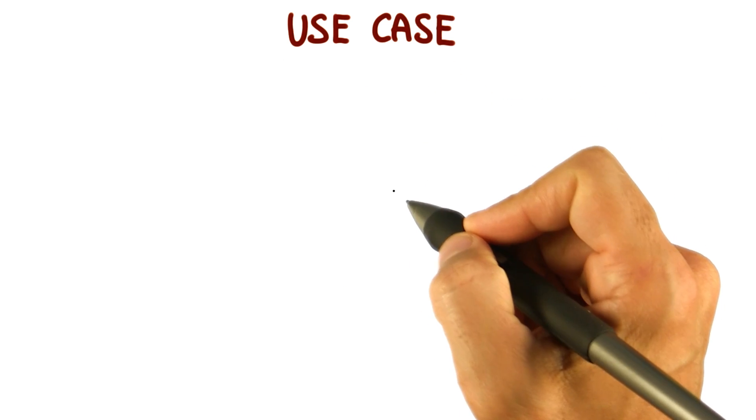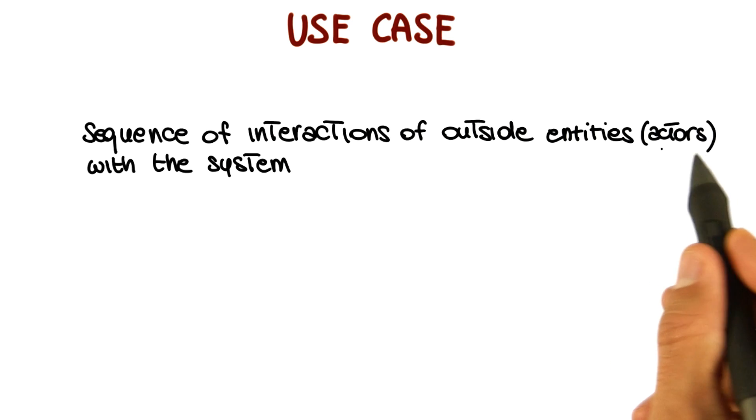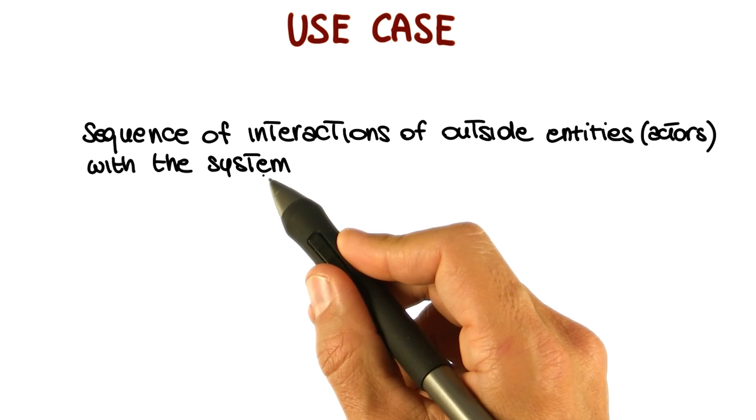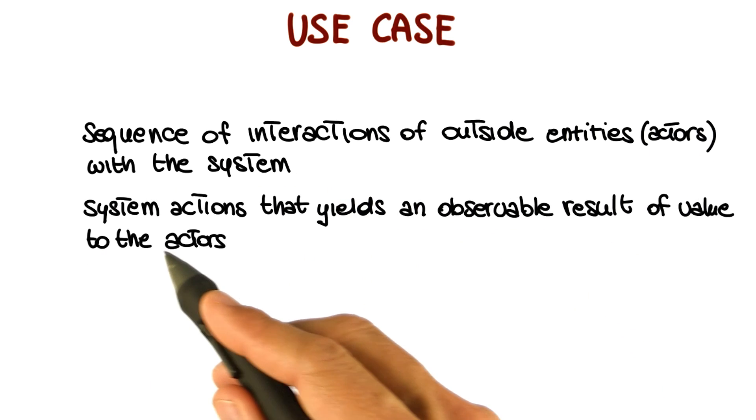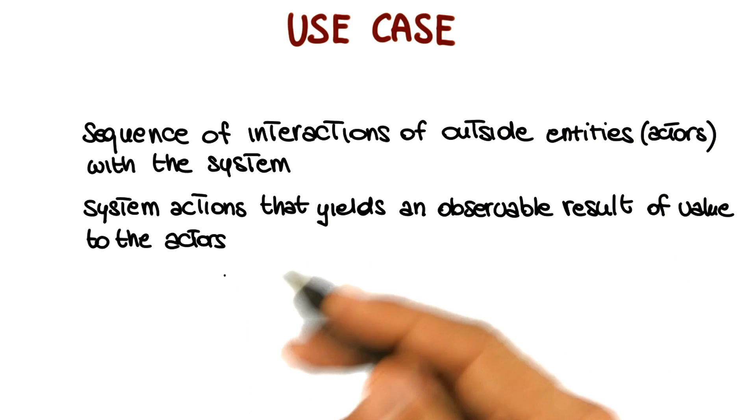A use case represents two main things. First, the sequence of interactions of outside entities, which is what we normally call actors, with the system that we're modeling. And the second thing is the system actions that yield an observable result of values to the actors.